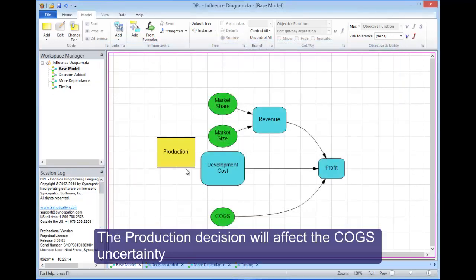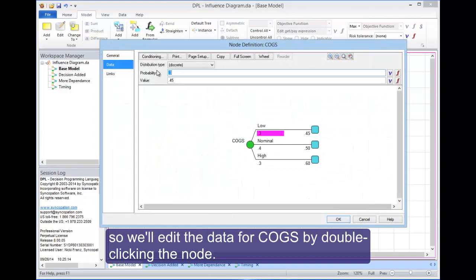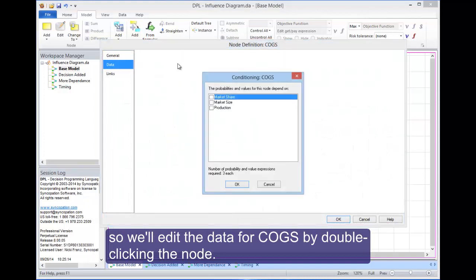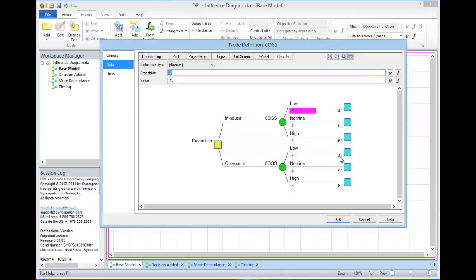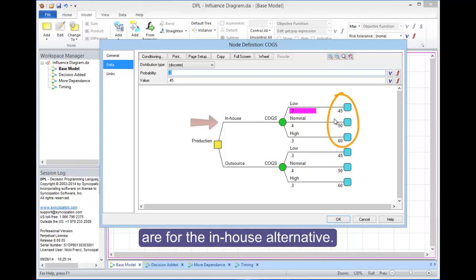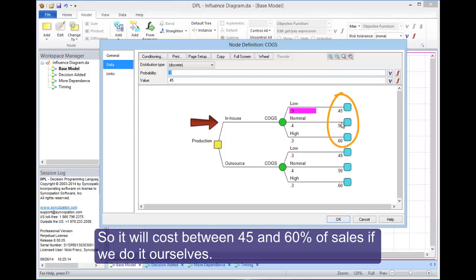The production decision will affect the COGS uncertainty, so we'll edit the data for COGS by double-clicking the node. Now we click the conditioning button and select production decision from the list. The numbers that we entered for COGS initially are for the in-house alternative, so it will cost between 45 and 60 percent of sales if we do it ourselves.